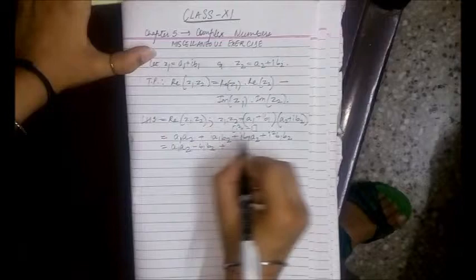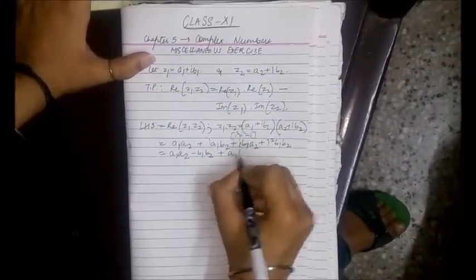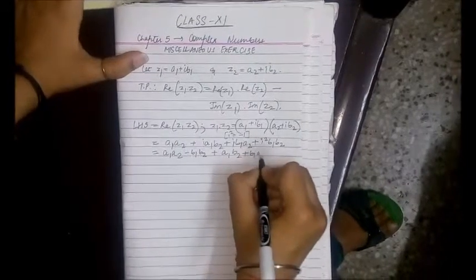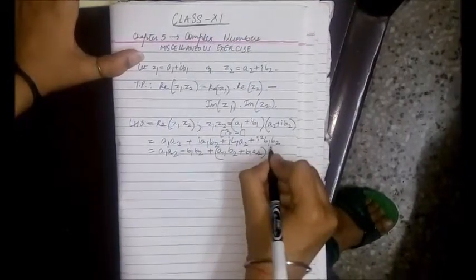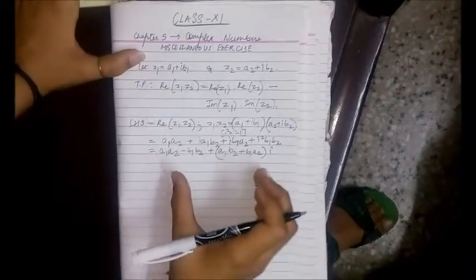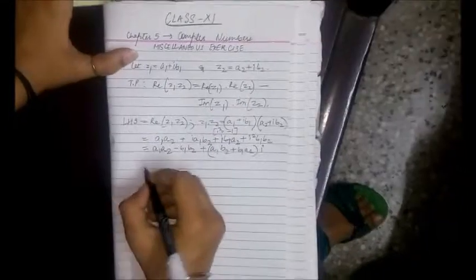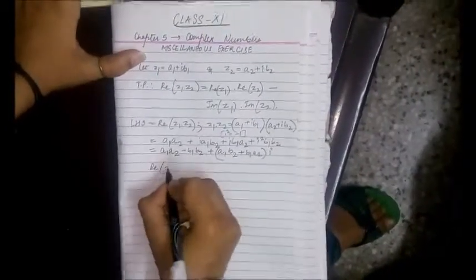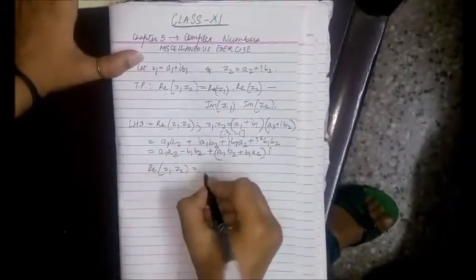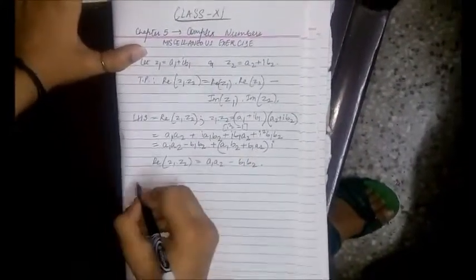Plus, now let's take iota common from these two terms. So we are left with A1 B2 plus B1 A2, and we have taken iota common outside. This gives us the standard form of the complex number Z1 into Z2. Now its real part, the real part of Z1 into Z2, is A1 A2 minus B1 B2. Now let's check the RHS.